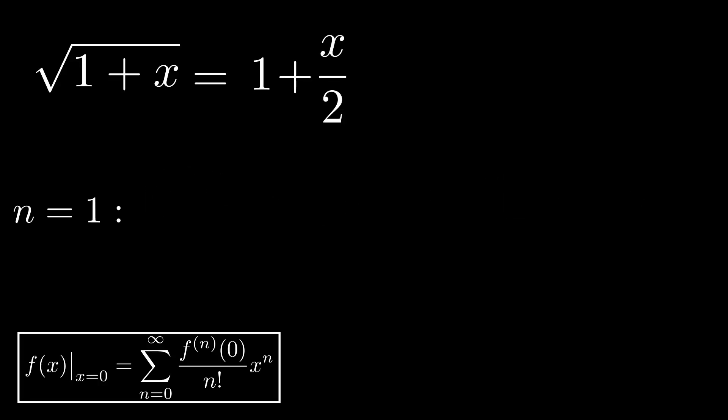We continue with n is equal to 2, our third term. By now, we know how it goes. We take the general form and fill in n is equal to 2. This time, we have to take the second derivative of our function, which in our case is minus 1 over 4 times 1 plus x to the power of minus 3 halves.